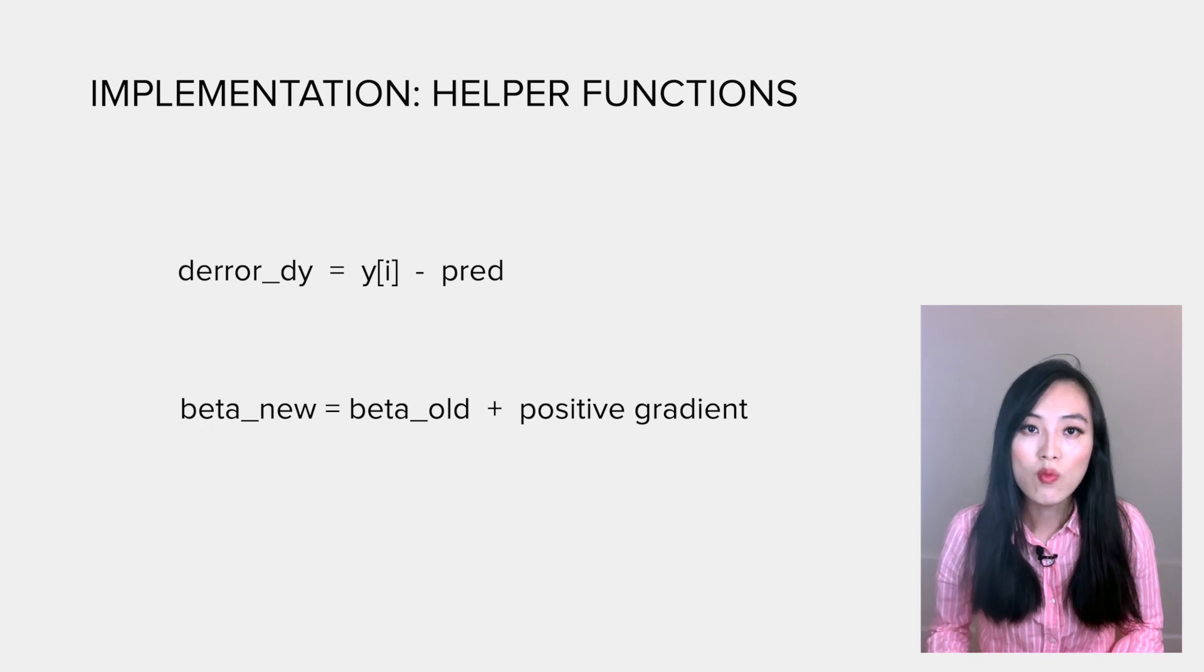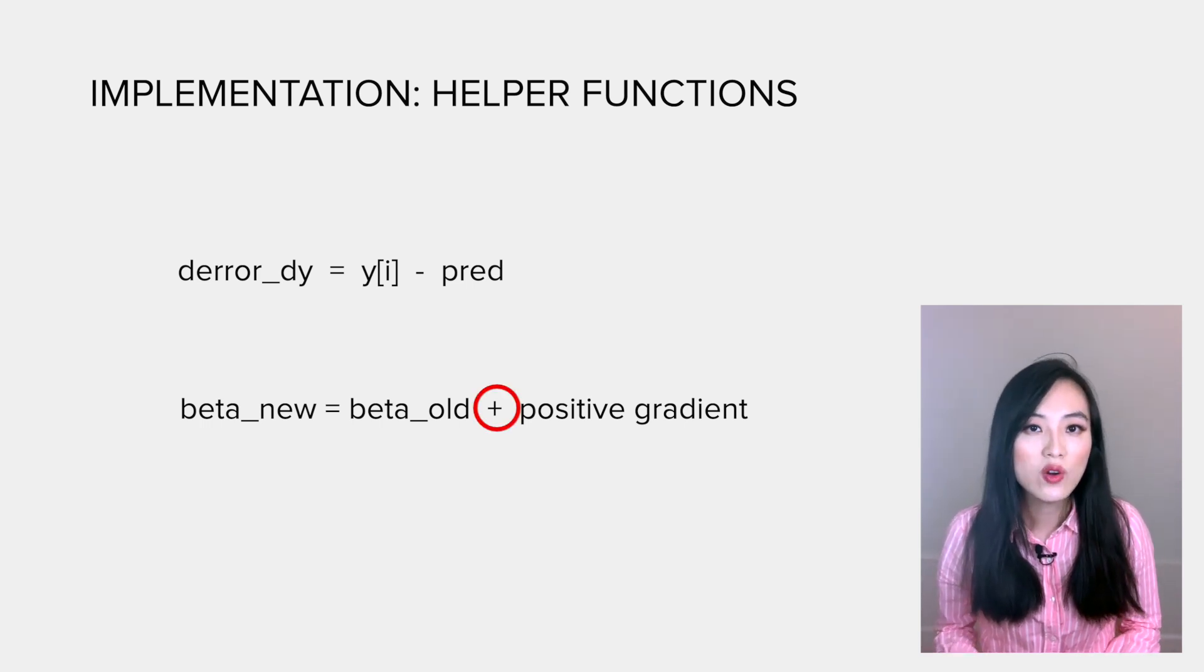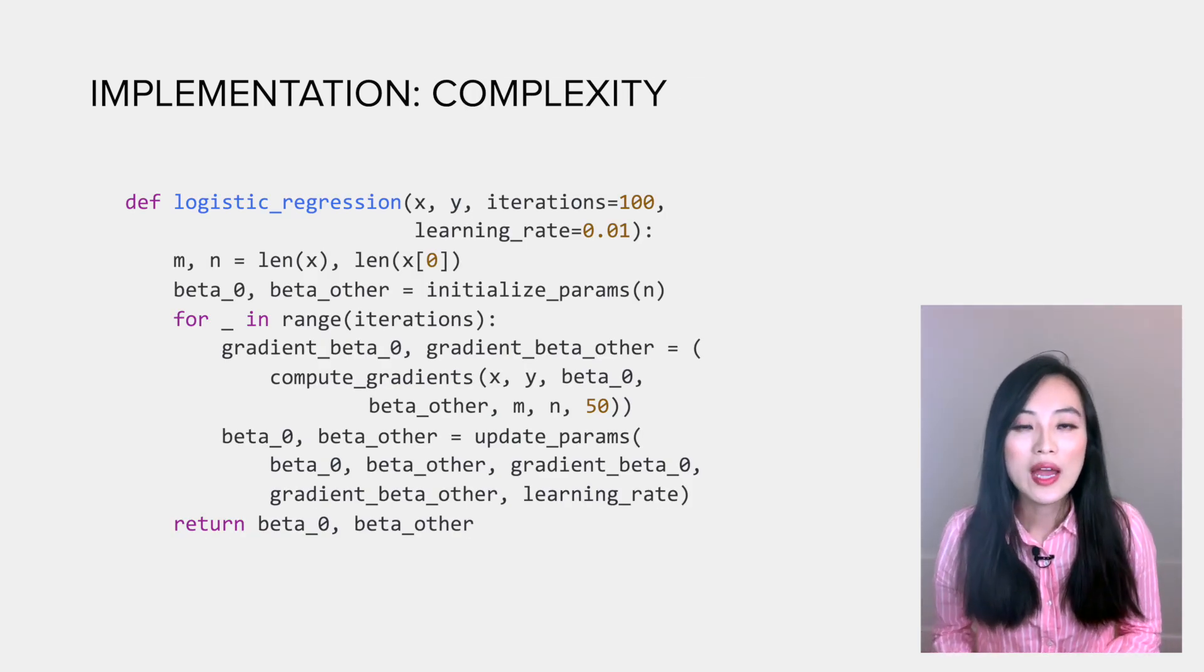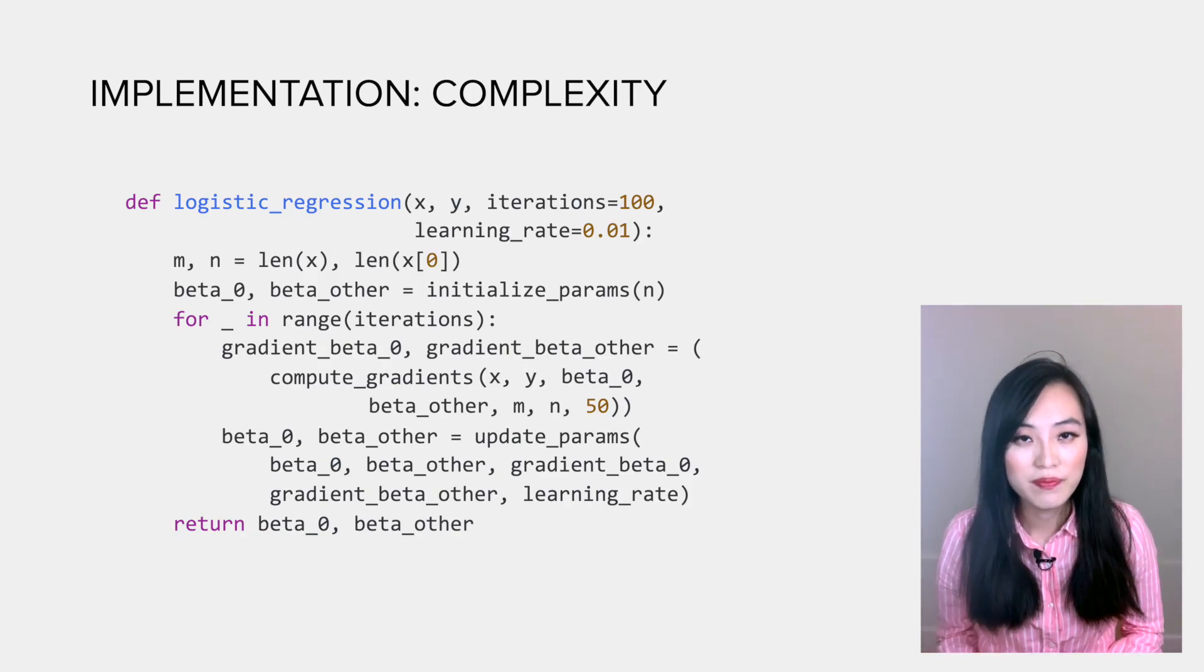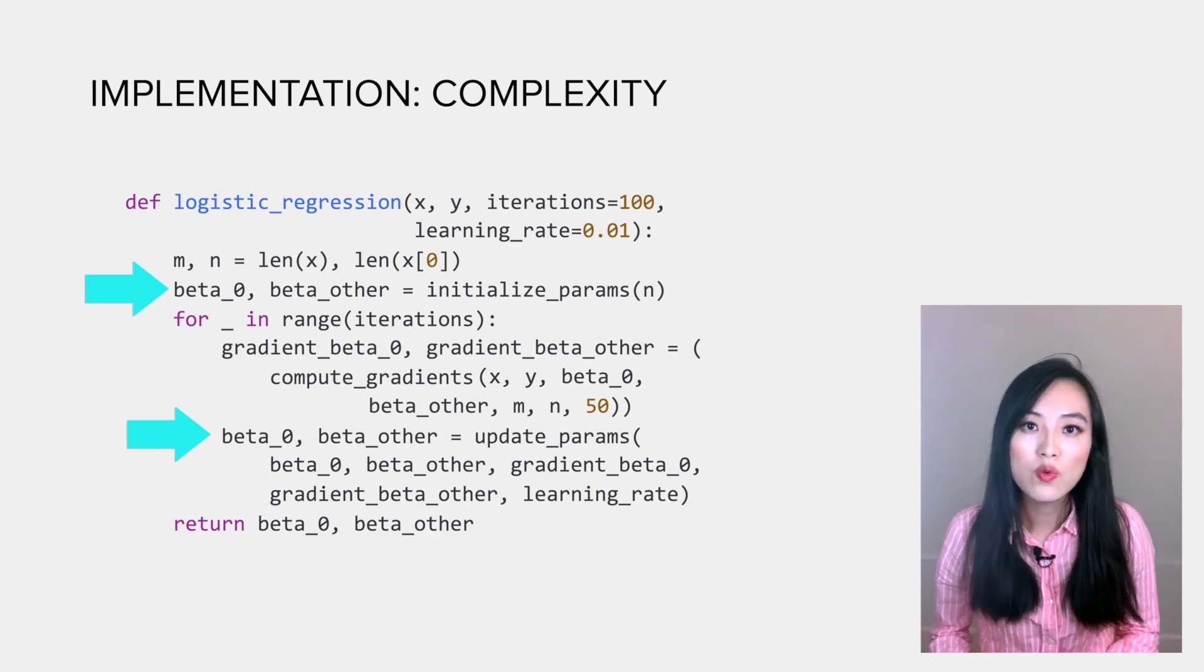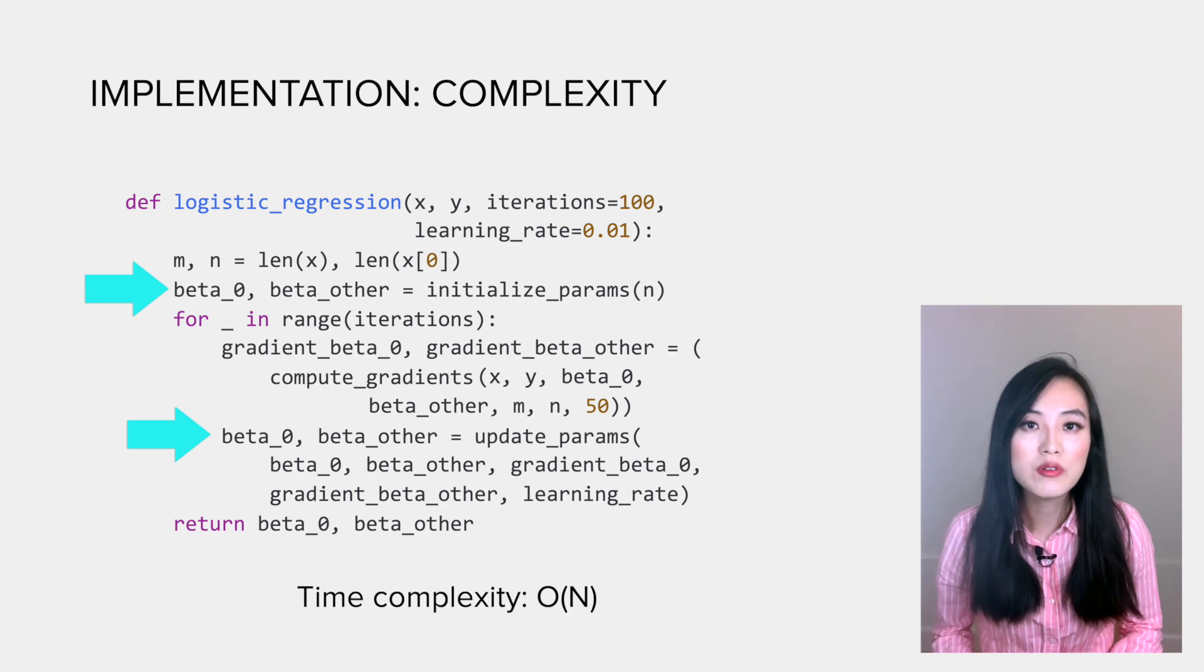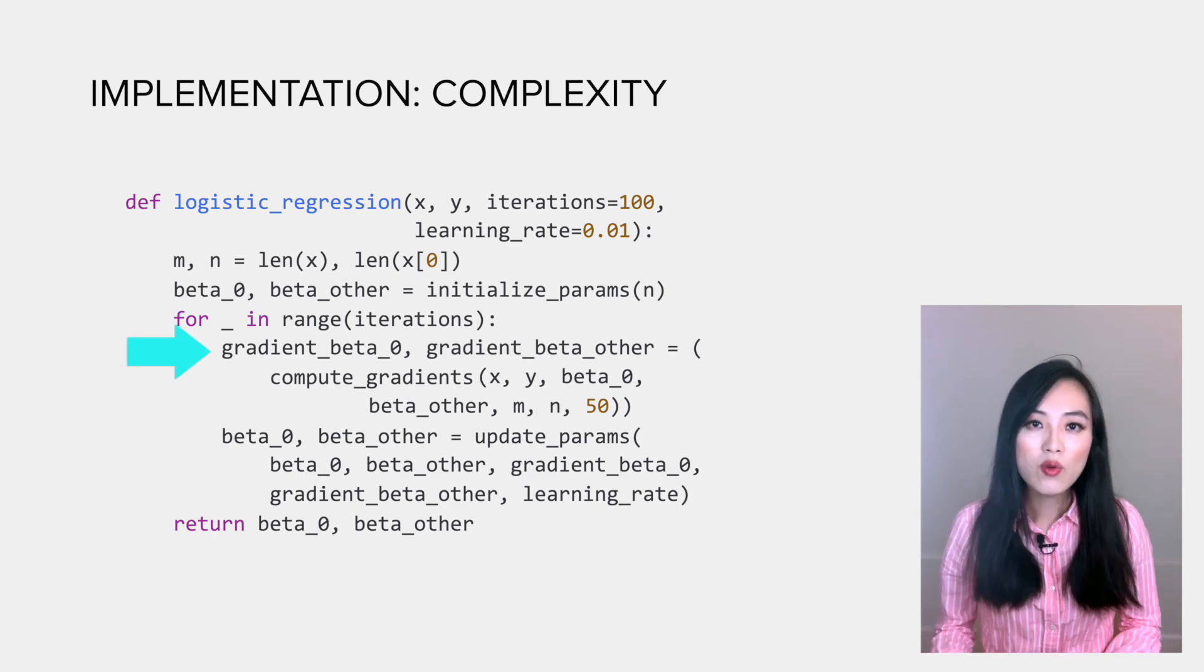Finally, let's look at the complexity of the implementation. Both initialize_params and update_params functions loop through all betas once, so both are O(n). The compute_gradients function goes through each data point and each feature, so the time complexity is O(mn).